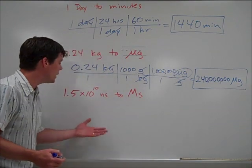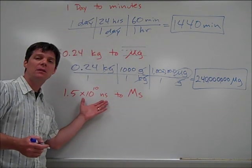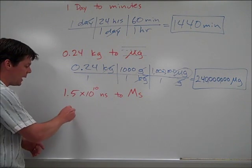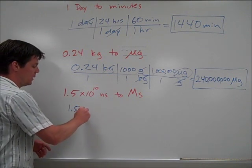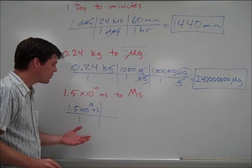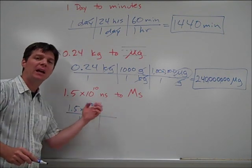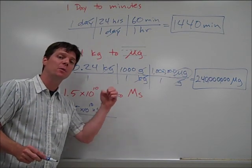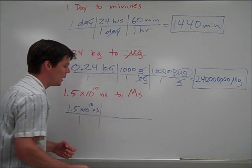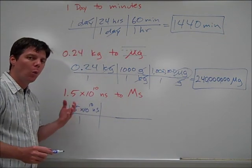The final one that we'll take a look at here is to convert from nanoseconds to megaseconds. So I'll take my value of 1.5 times 10 to the 10 nanoseconds, put that into a fraction. Now, I want to convert from nanoseconds to seconds. Then, I'll convert from seconds to megaseconds.